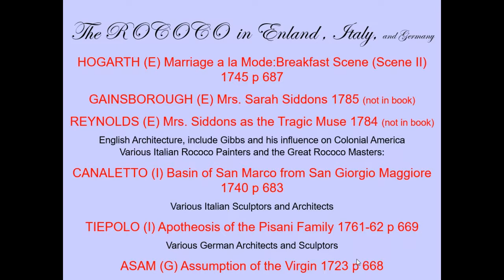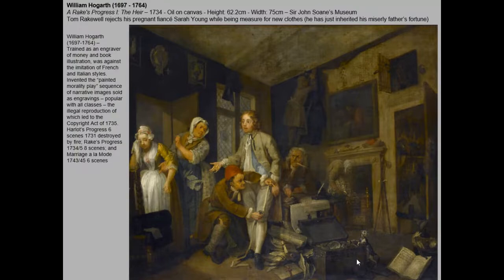Welcome to our final lecture for unit two. This is the Rococo outside of France — England, Italy, and a bit in Germany. Some big names to keep an eye out for in England: William Hogarth and his painting Marriage à la Mode. We'll also be looking at portraits by Gainsborough and Reynolds, the Italian painters Canaletto and Tiepolo, and the German sculptor Assam.